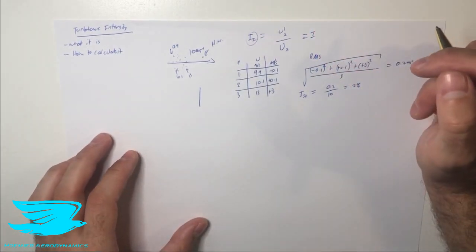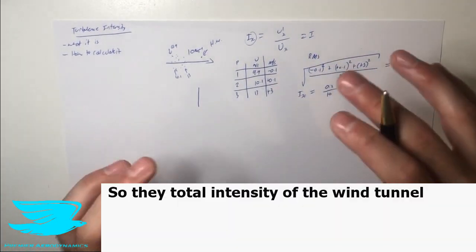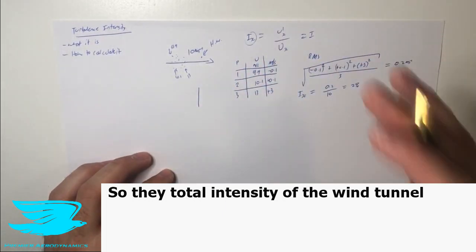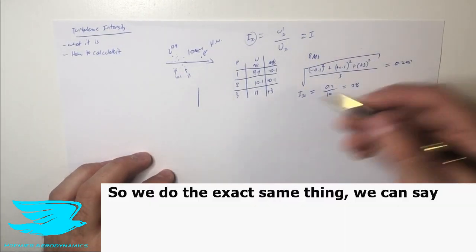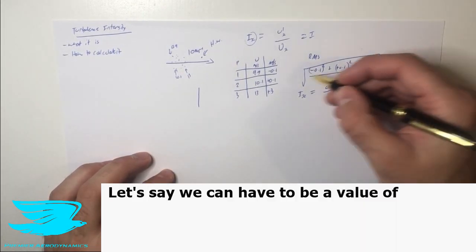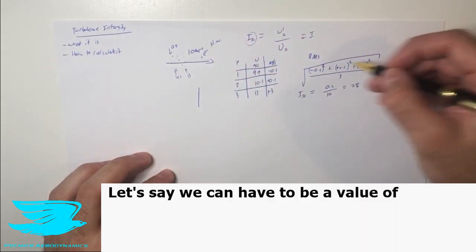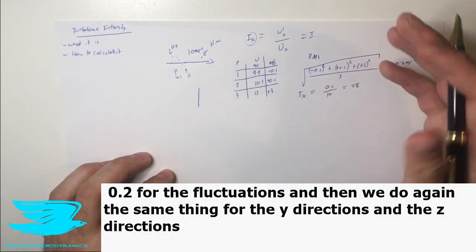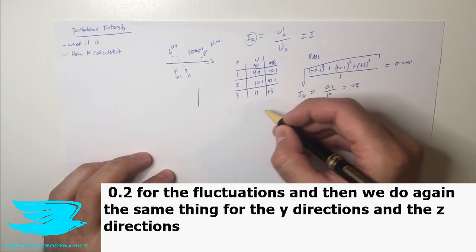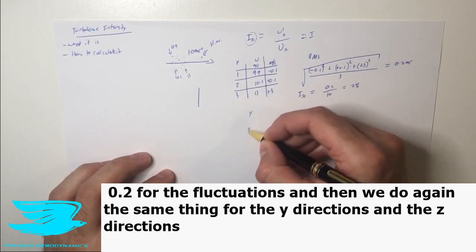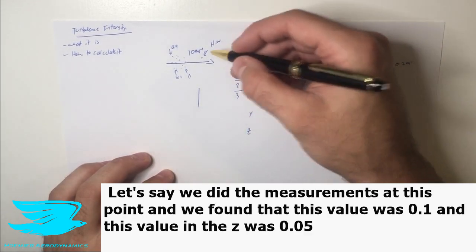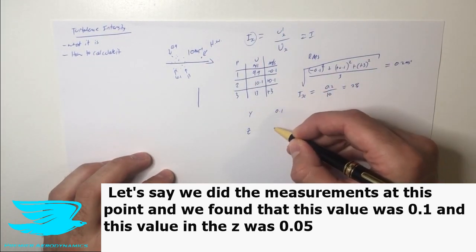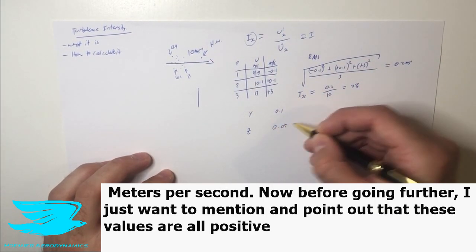But let's say we want to get even more specific, and go and figure out the turbulence intensity in all three directions. So the total turbulence intensity of the wind tunnel. So we do the exact same thing. So we can say, let's say in this X direction, we've done this, and we got a value of 0.2 for the fluctuations. And then we do the same thing for the Y directions and the Z directions. And let's say we did measurements at this point, and we found that this value in the Y was 0.1, and this value in the Z was 0.05 meters per second.